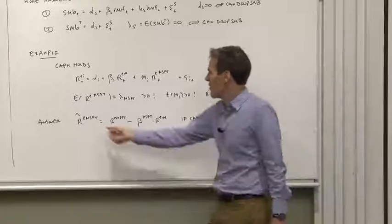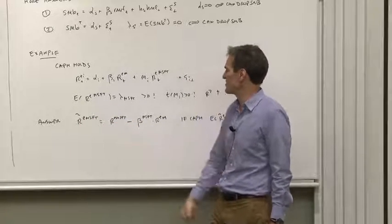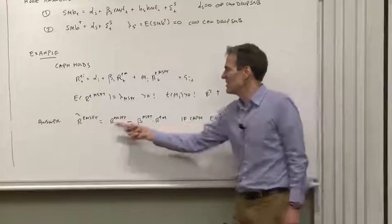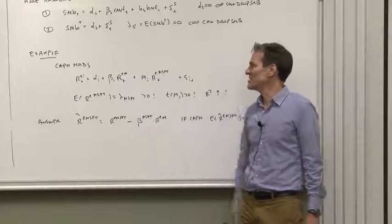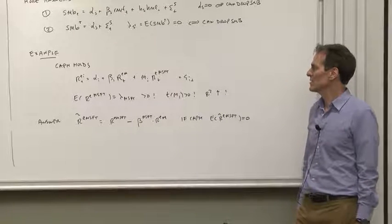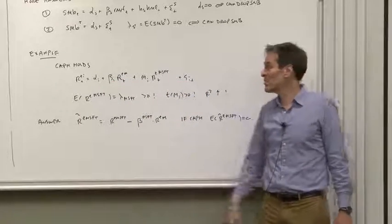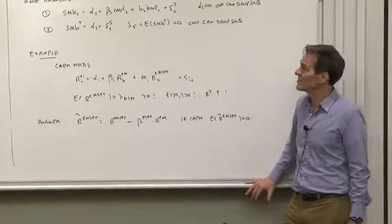To see the reason why, Microsoft, let's create an orthogonalized Microsoft. It's the return of Microsoft minus its beta on the market. If the CAPM is true, the mean of the orthogonalized Microsoft return is, in fact, zero. And that tells us we don't absolutely need it to include as an asset pricing model. It's not doing any harm. The alphas are the same with one or the other, but it is not needed in the asset pricing model to price the other things.